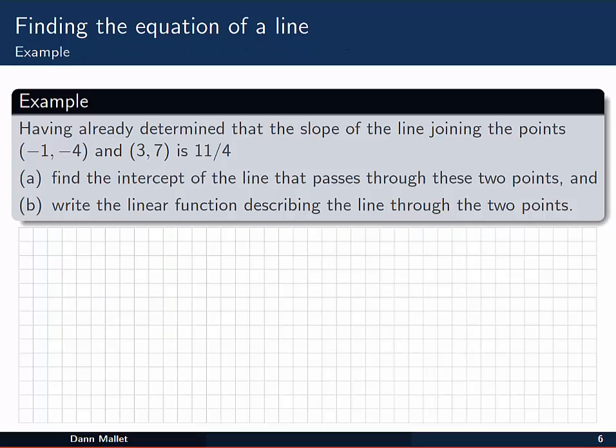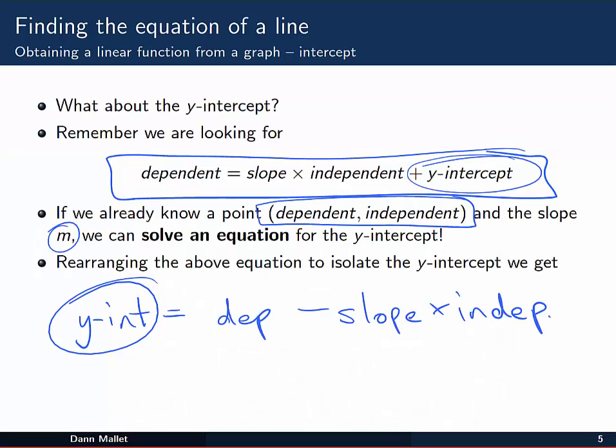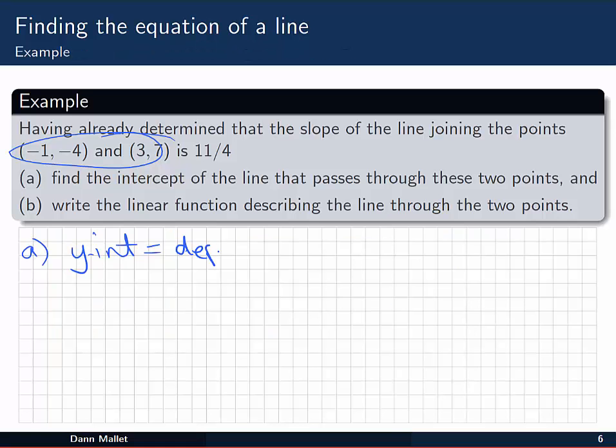So continuing on the example from earlier, having already determined that the slope of the line joining these two points is 11 on 4, let's find the intercept of the line that passes through these two points. So that's part A. From the previous slide, y-intercept is going to be equal to the dependent variable value minus the slope multiplied by the independent variable value.